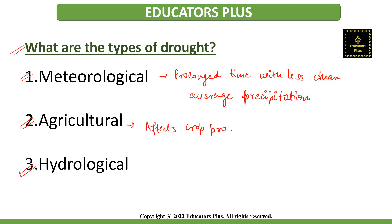Agricultural drought affects crop production and the ecology of the range. This condition can also arise independently from any change in precipitation levels, where increased irrigation demands, soil conditions, or erosion triggered by plant agriculture creates a shortfall in water available to crops. In a traditional drought, it is caused by an extended period of below average precipitation.